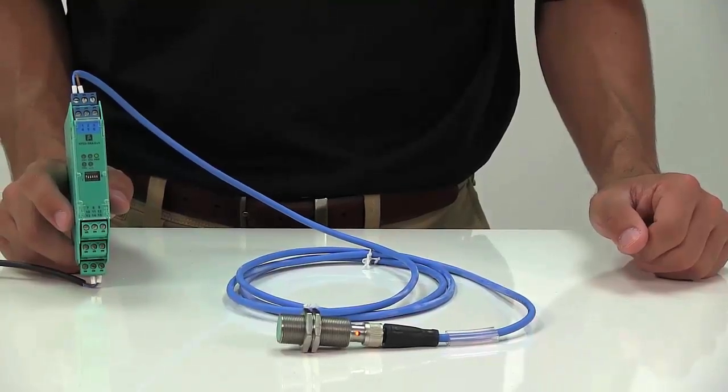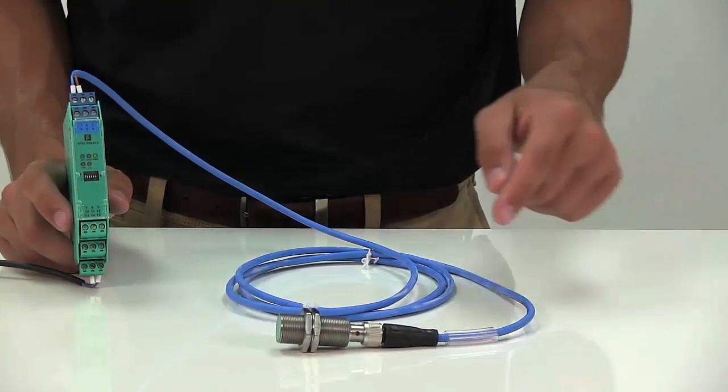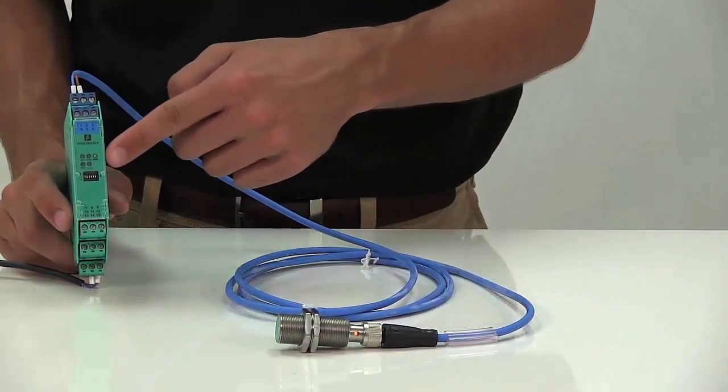Now that our configuration is powered up, let's see how it operates. We have LEDs on the sensor and the barrier face to denote sensor function.